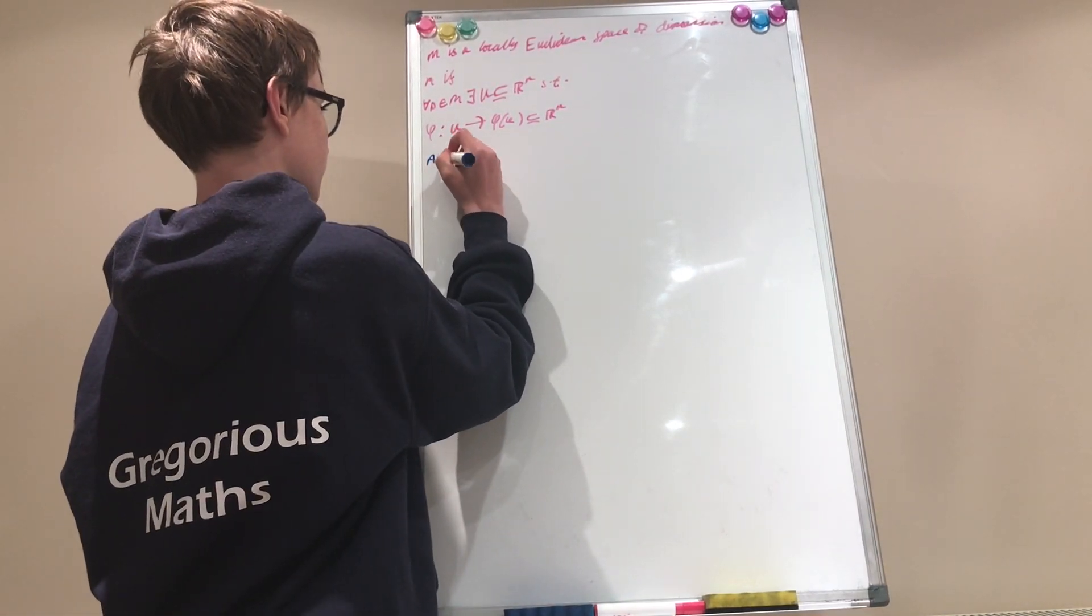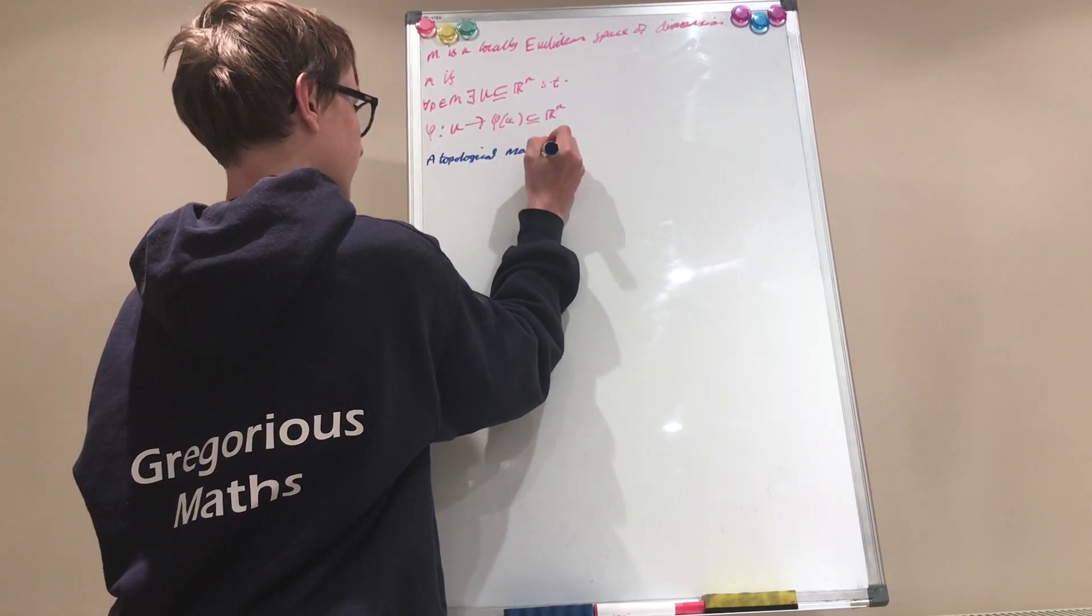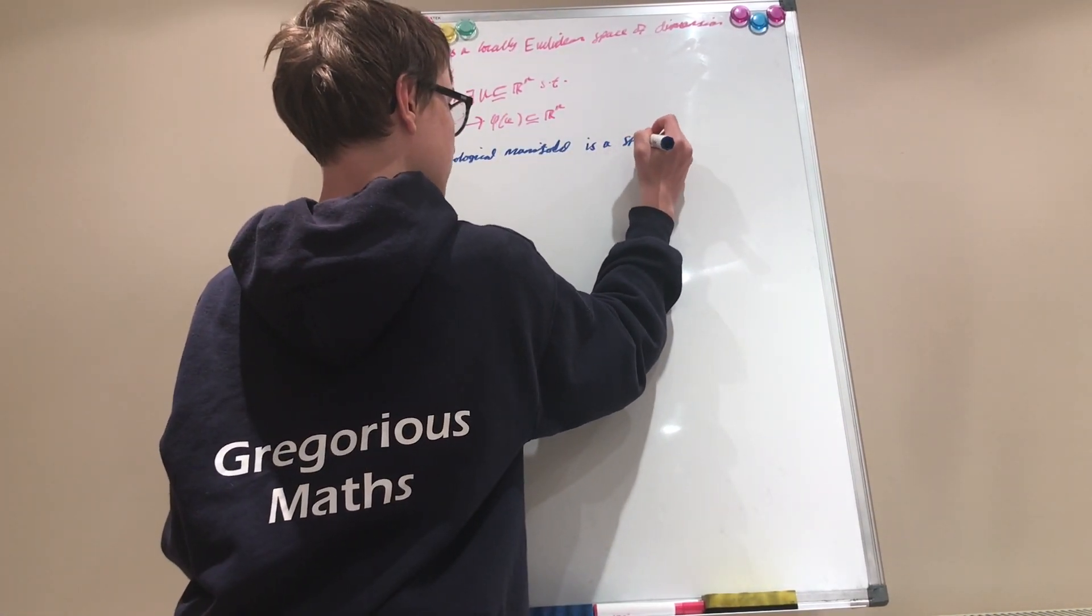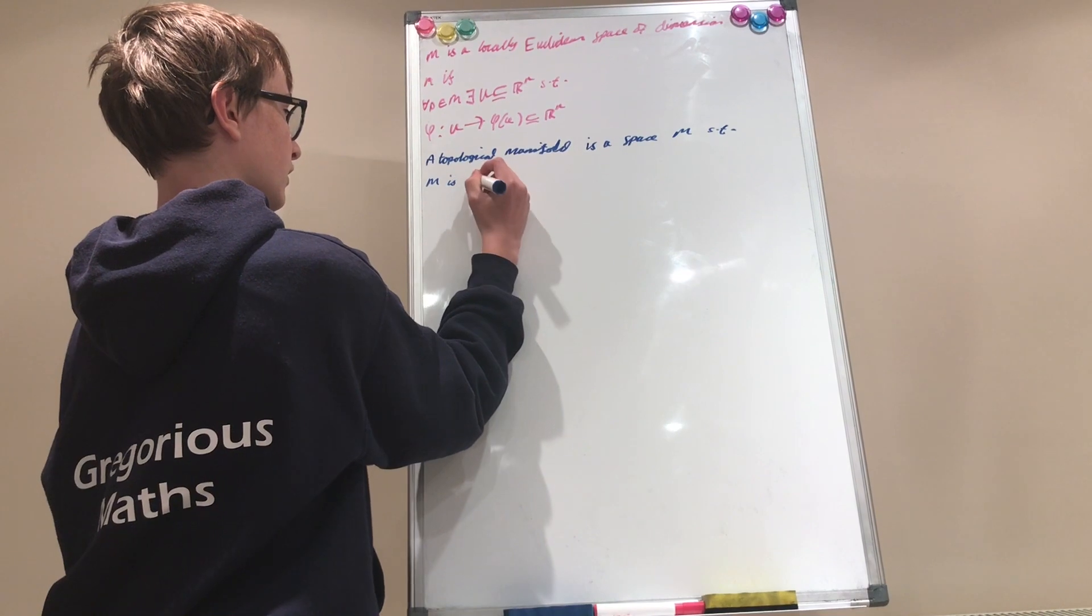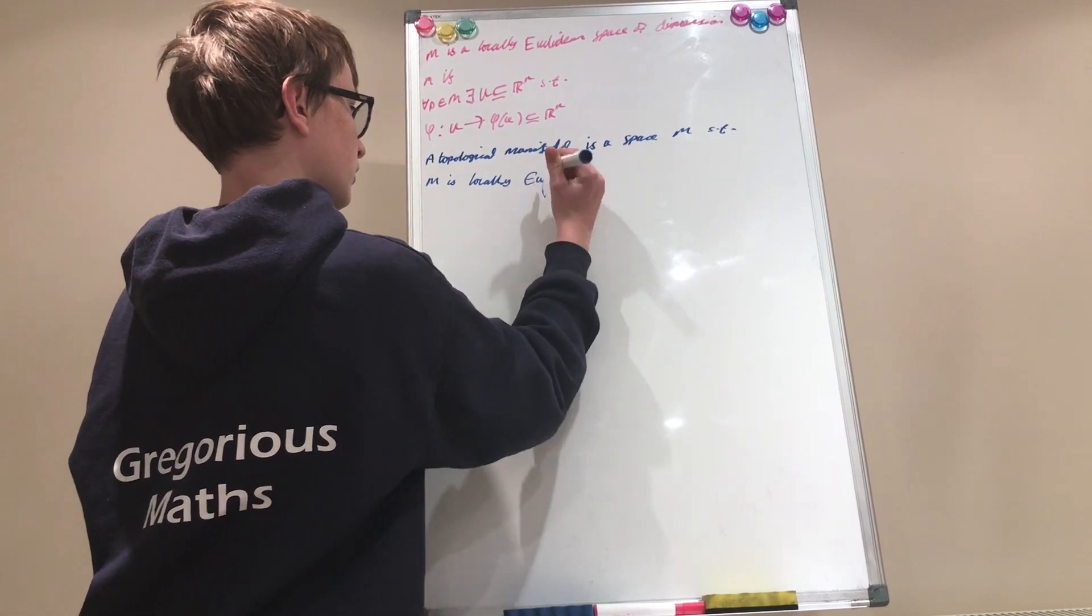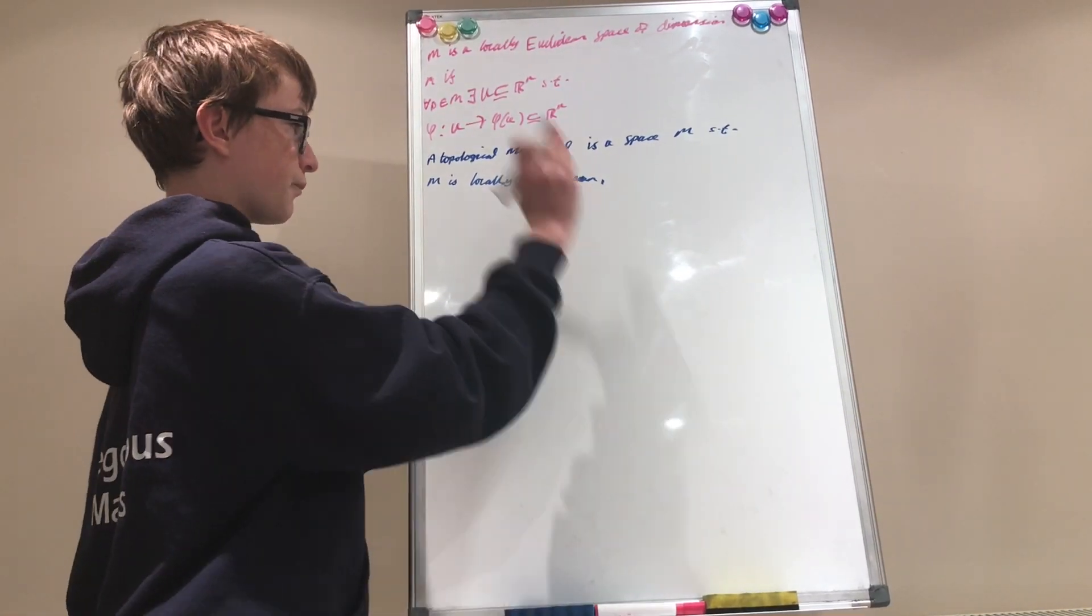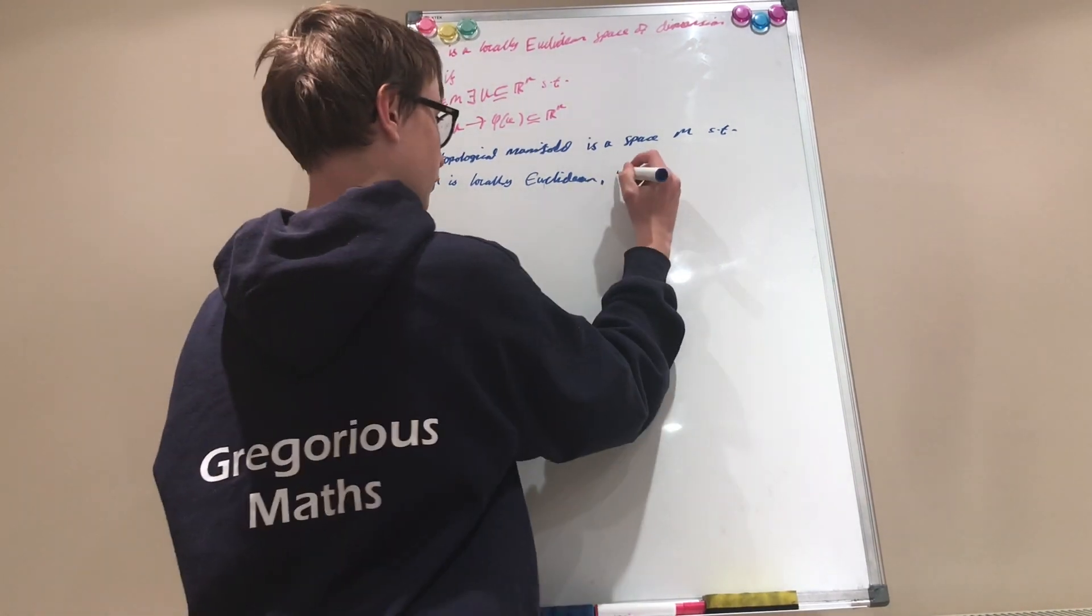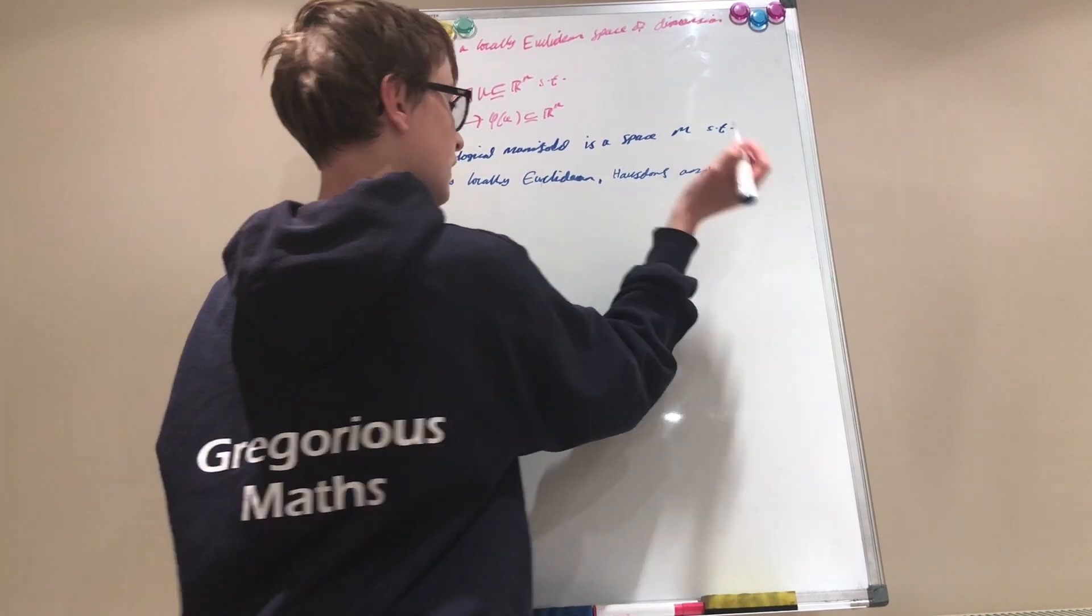a topological manifold is a topological space m, such that m is locally Euclidean, Hausdorff, and second countable.